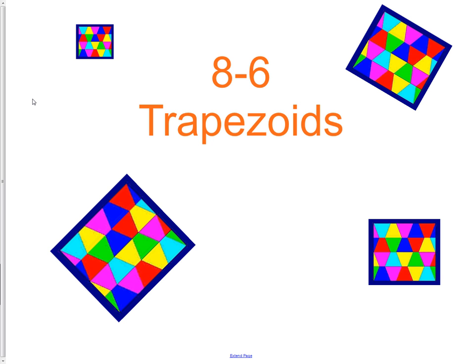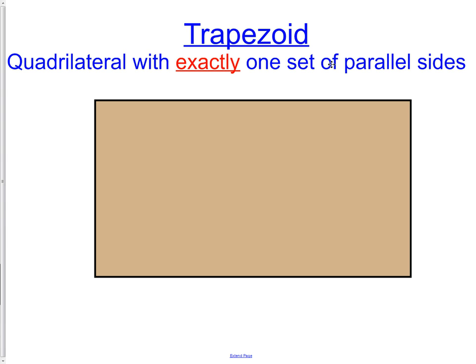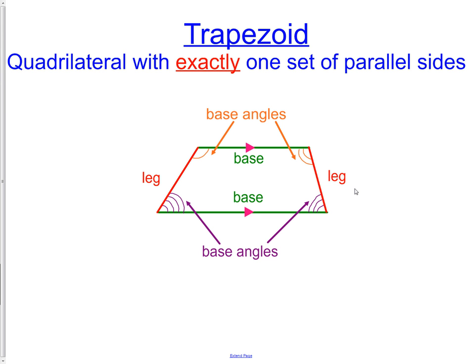8-6 trapezoids. Hopefully you remember generally what a trapezoid is, but today we're going to learn a little bit more about their properties. A trapezoid is a quadrilateral with exactly one set of parallel sides. Looking at the picture, the green sides are parallel to each other, and the red sides are not.